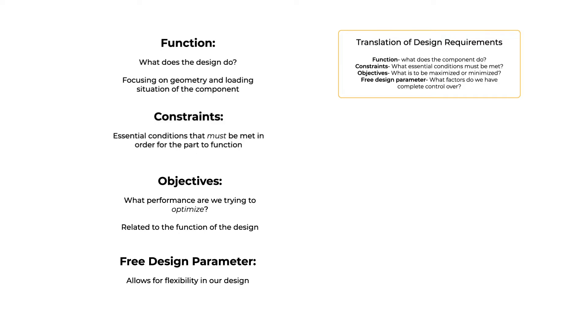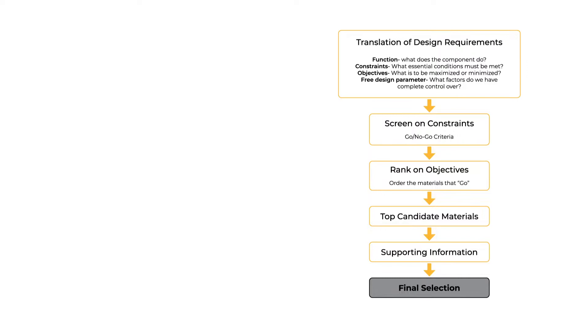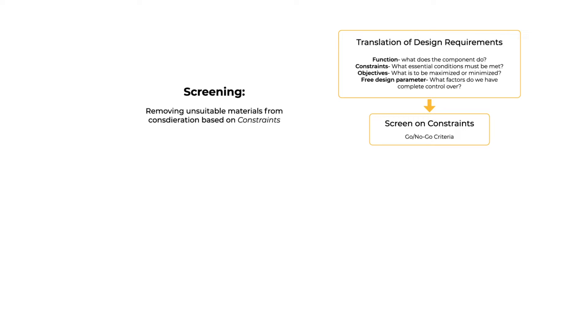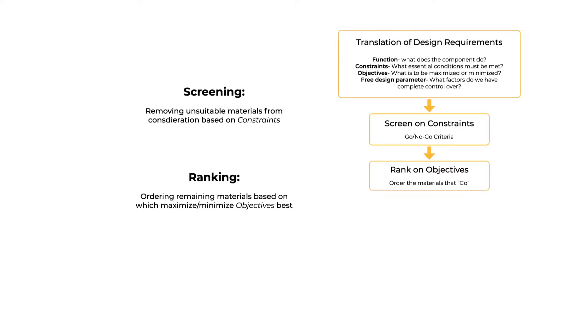Once we have our material properties and loading conditions, we can move on to our screening and ranking stages. If you watched our material selection using Ashby Charts innovation course, you're familiar with these terms. First, we screen our engineering materials based on the constraints — constraints determine which material properties are acceptable or not for a design. Then we rank the materials that are left over based on our objectives, seeing which materials best maximize or minimize our properties of interest, their performance.